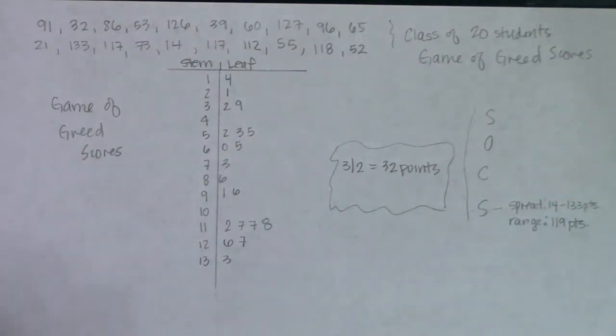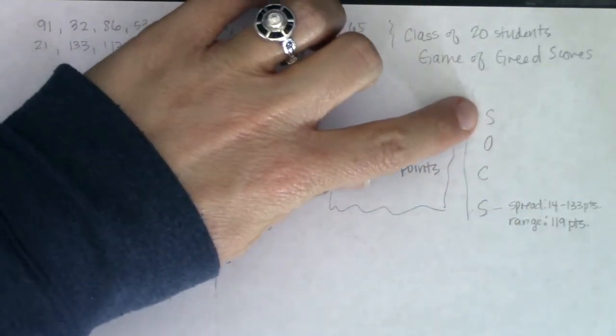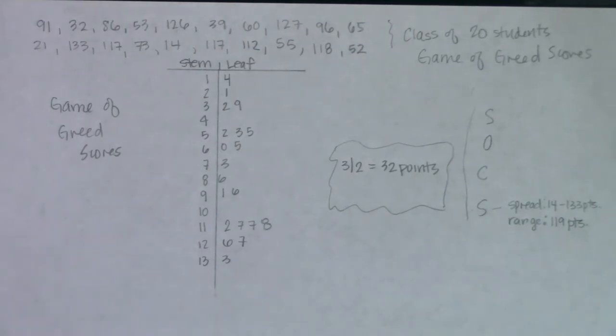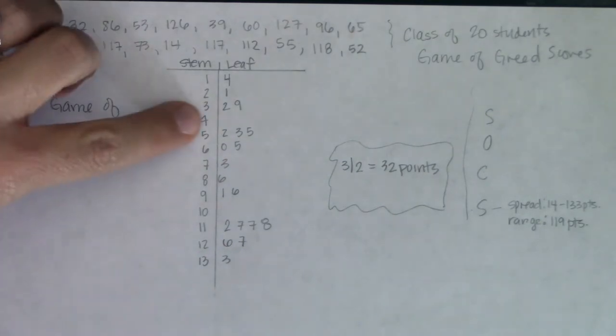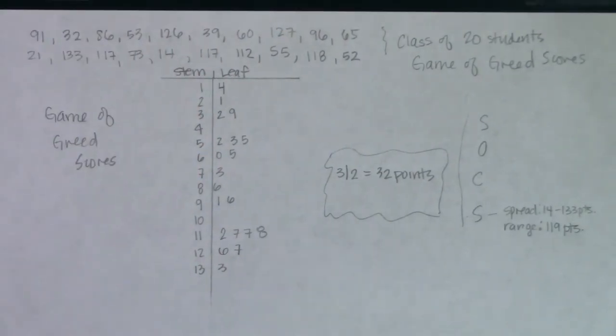So again, I'm putting units on all of my statistics. All of your statistics, other than shape, outlier, center, and spread, they always have the same units as the units of your problem because they're data values. All right. So there's our stem and leaf plot. You can see it had some gaps. No one scored in the 40s. No one scored in the 100s. But it was 14 to 133.